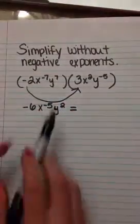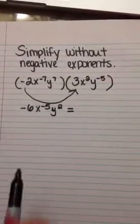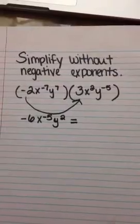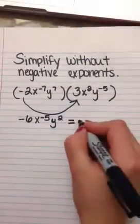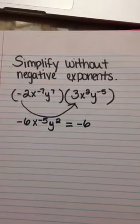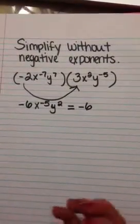Now we need to get rid of that negative 5 exponent. So we must bring it down to the denominator to get rid of the negative. The -6 stays the same. Remember that can always be negative, it doesn't really matter. We just want the negative exponent to get cancelled out.